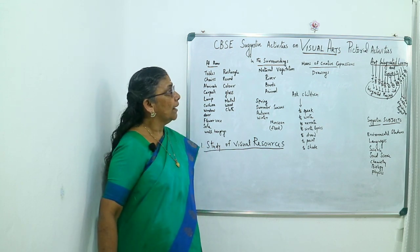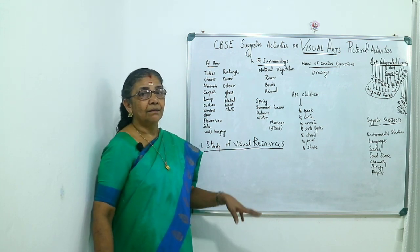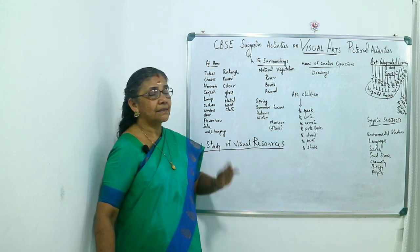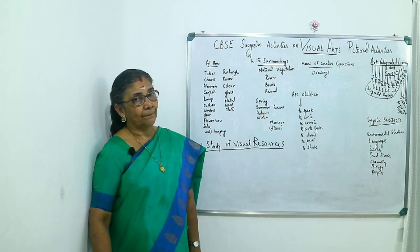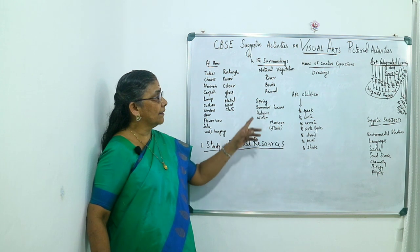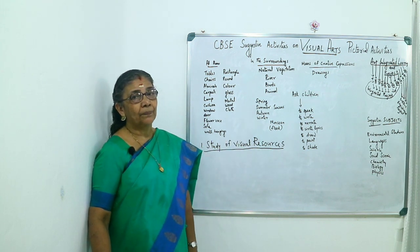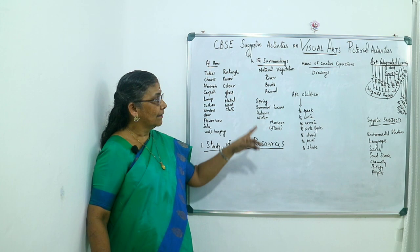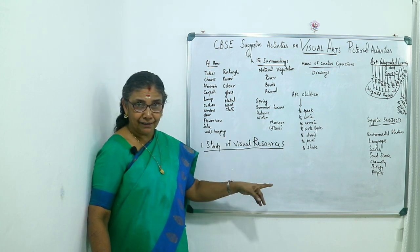That is natural vegetation. And rivers, then birds, animals etc. that we can see. And seasons are also given there: spring, summer, autumn and winter.